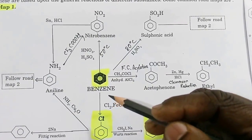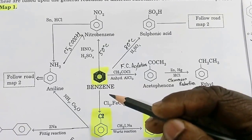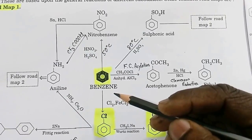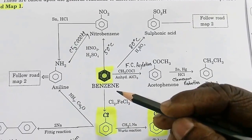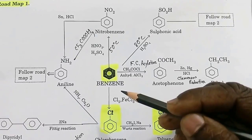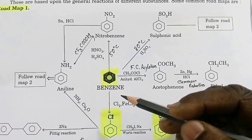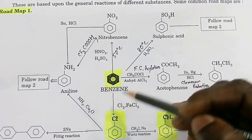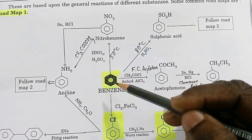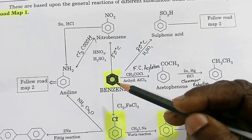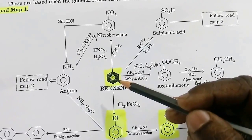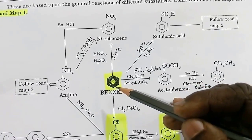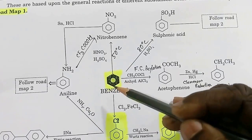Hello students, welcome to my chemistry class. In the last session we discussed aliphatic organic conversions, and today I am going to discuss aromatic organic conversions. As we know, in aromatic compounds the parent compound is benzene, so it's better to start with benzene. Benzene is the parent aromatic hydrocarbon, from which a large number of organic compounds can be synthesized step by step.